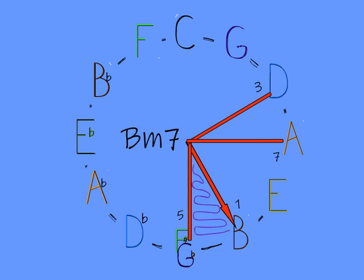The 1 and 5 notes B and F sharp make a pair, and the flat 3 and flat 7 notes D and A also make a pair. Notice that even though we think of these two notes as the 3 and 7 notes, they're also a 1-5 pair.